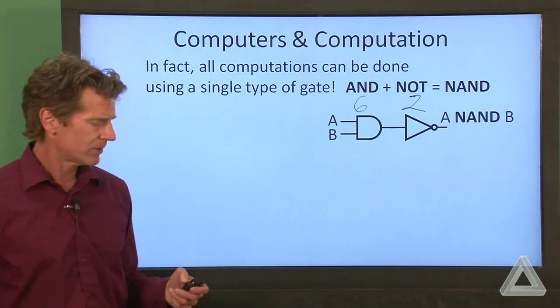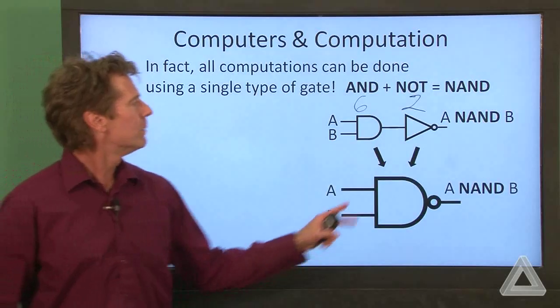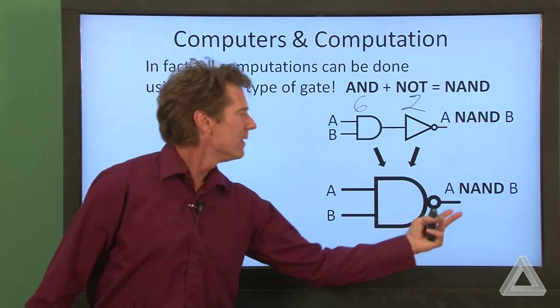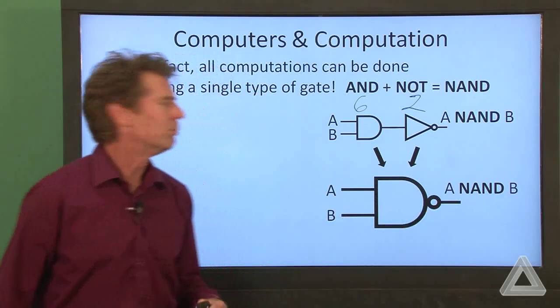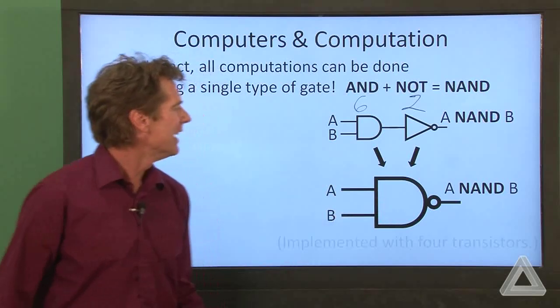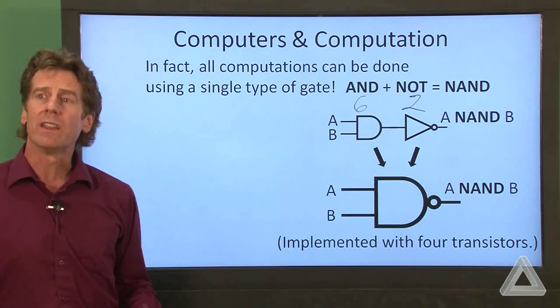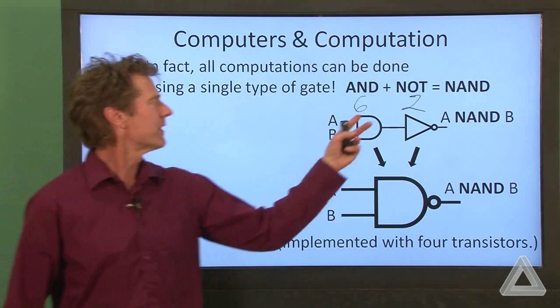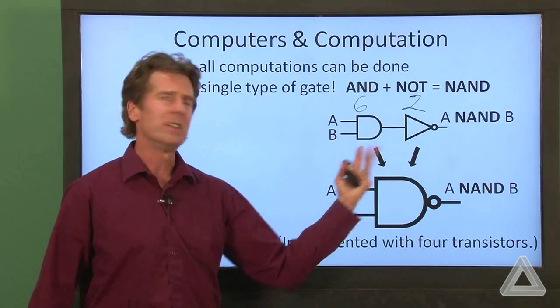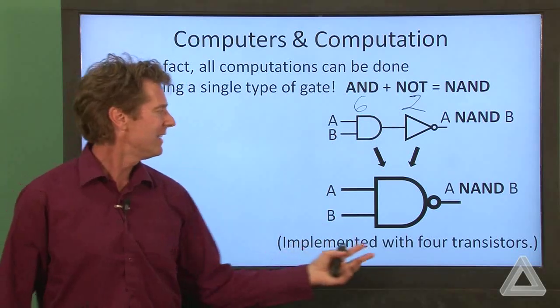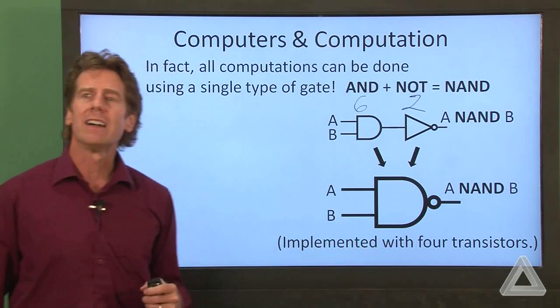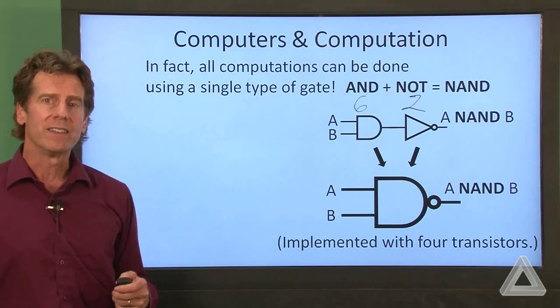We're not truly concerned with that, but if we combine these, we use a new symbol. We just put this bubble on the end of an AND gate, and this can be implemented with four transistors. So it's rather strange. We started with six and two. We stick them together. You might think it'd be eight, but no, it can be realized with just four transistors.